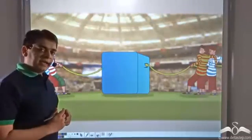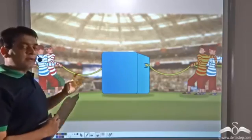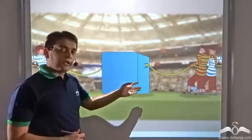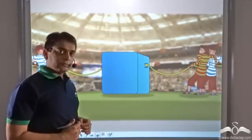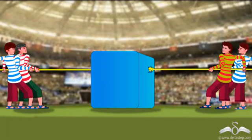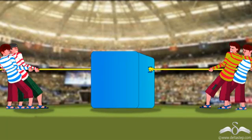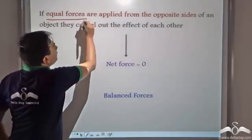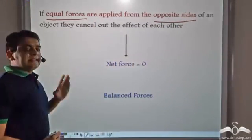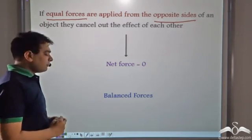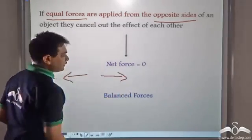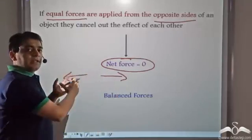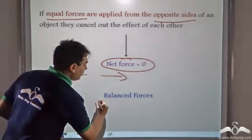Now what happens when forces act in opposite directions? We just saw that two boys were able to make the box move when they pulled together in the same direction. But what happens if two boys start pulling the box in opposite directions? We see that if two boys pull the box from each side — that is from opposite sides — the box does not move. When equal forces are applied from opposite sides of an object, they cancel out each other's effect. The net force is equal to zero — they balance out, and hence such forces are known as balanced forces.